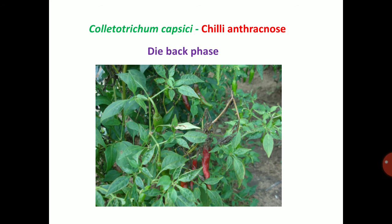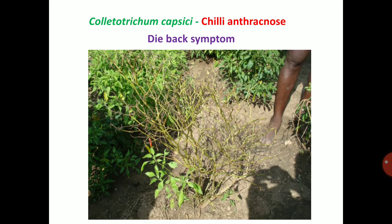In Colletotrichum capsici, which causes chili anthracnose, there are two phases. First is the dieback phase — the infected twigs become straw colored and produce dot-like acervuli. These dot-like black color structures resemble the acervuli. Acervulus is the asexual fruiting body of Colletotrichum. This is the severely infected dieback symptom of chili anthracnose, with straw colored twigs bearing black colored dots.